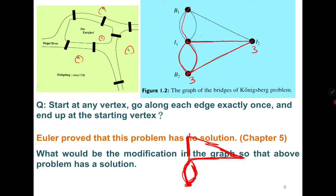In the original graph the degrees are 3, 3, 5, and 3. When we modify the graph, the degrees become 2, 4, 2, and 2 — all even numbers of edges incident to each vertex — and in that case it is always possible. Graphs for which this is possible are called Euler graphs, which we will discuss in Chapter 5.